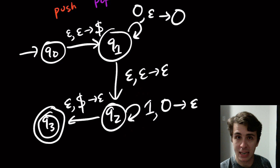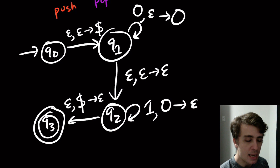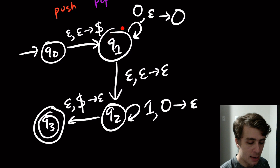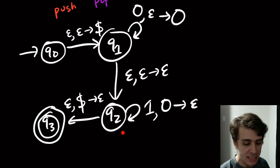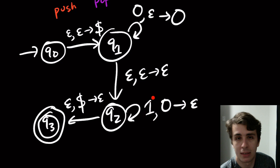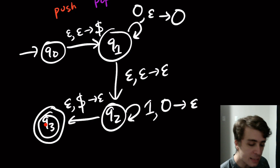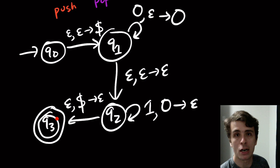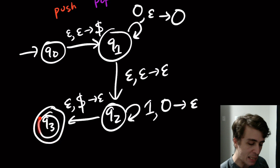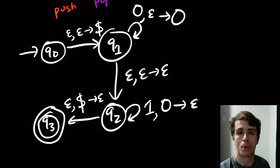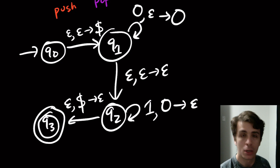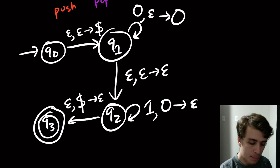If there are more ones than zeros, we push all the zeros and pop them with the ones, leaving the dollar sign on top. We take the final transition to q3 — an accept state — but we still have input left to read. Since we have to read the whole input to accept, this fails and the string is rejected.